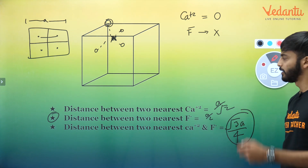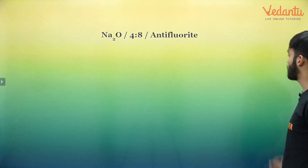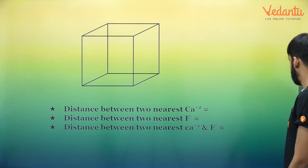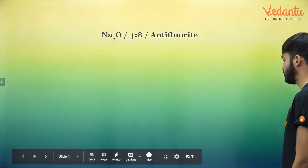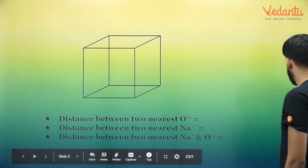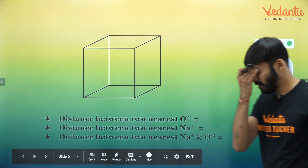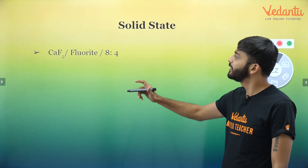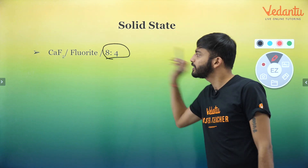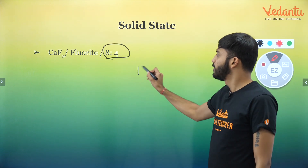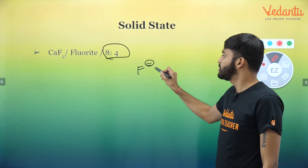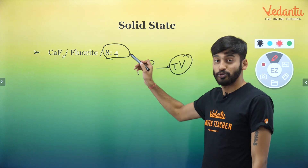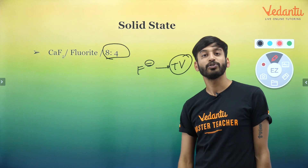One thing I have to tell you — how did the coordination number come out? It's 8:4. How? F⁻ is present in the tetrahedral void. Since it is present in the tetrahedral void, the coordination number of fluorine is 4. But calcium is giving 8 — how?